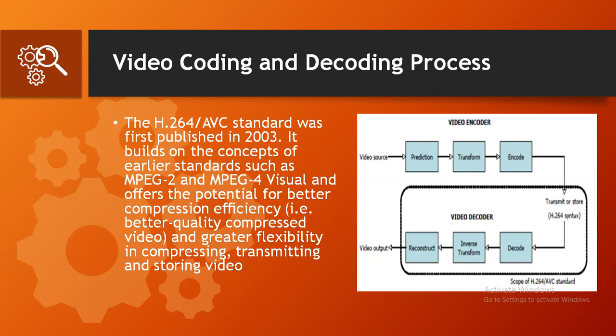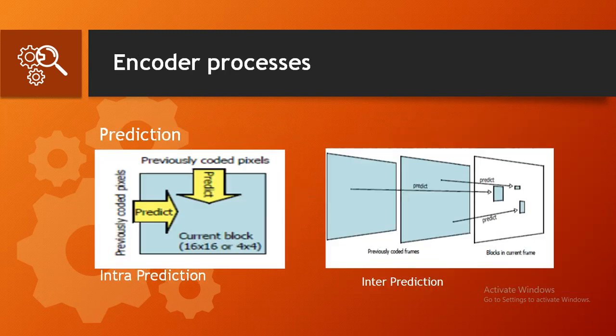H.264/AVC builds on the concepts of earlier standards such as MPEG-2 and MPEG-4 Visual and offers the potential for better compression. The H.264 video encoder carries out the prediction, transform, and encoding processes to produce a compressed H.264 bit stream. An H.264 video decoder carries out the complementary process of decoding, inverse transform, and reconstruction to produce a decoded video sequence. The encoder process contains two types of prediction: intra prediction and inter prediction.